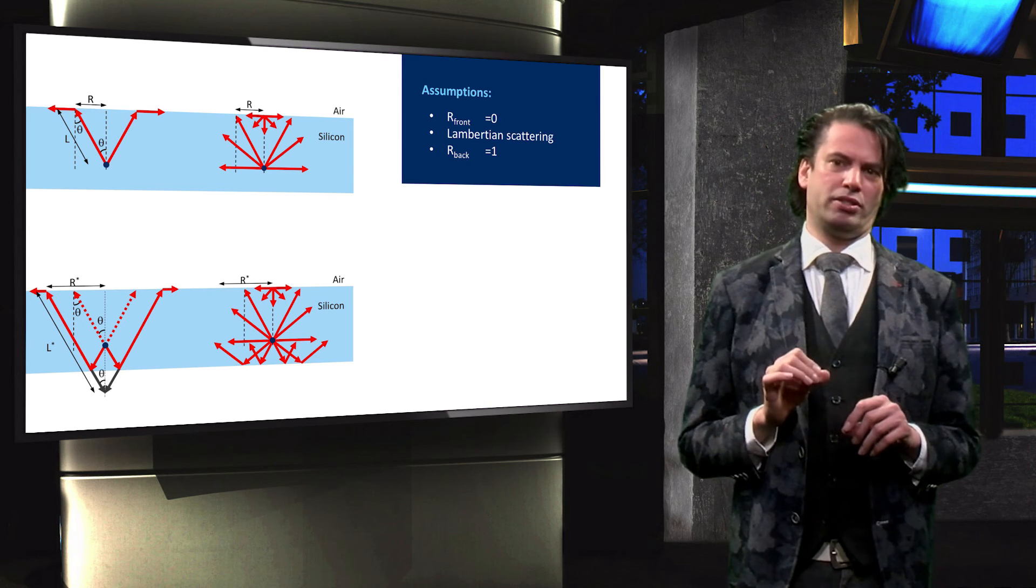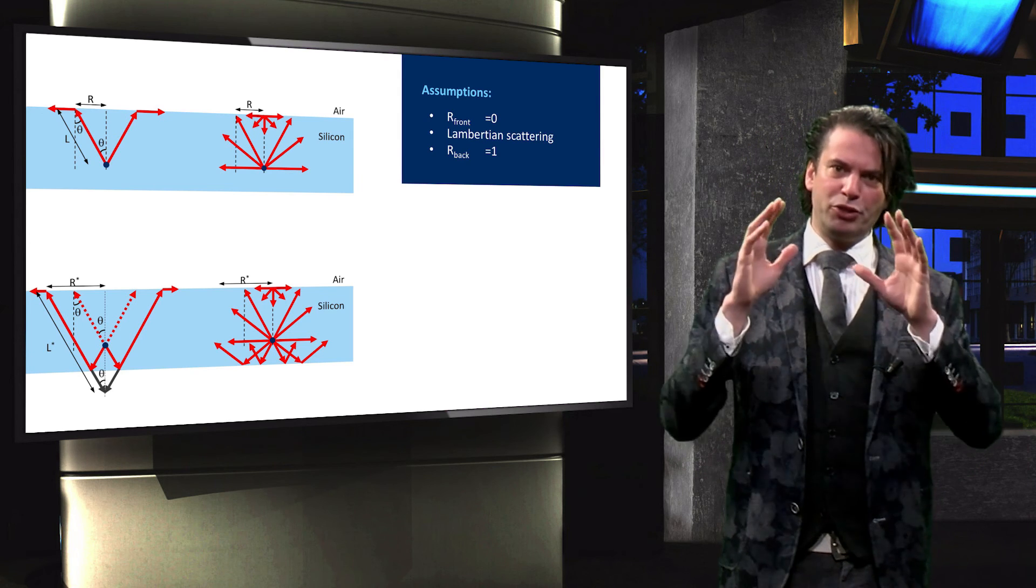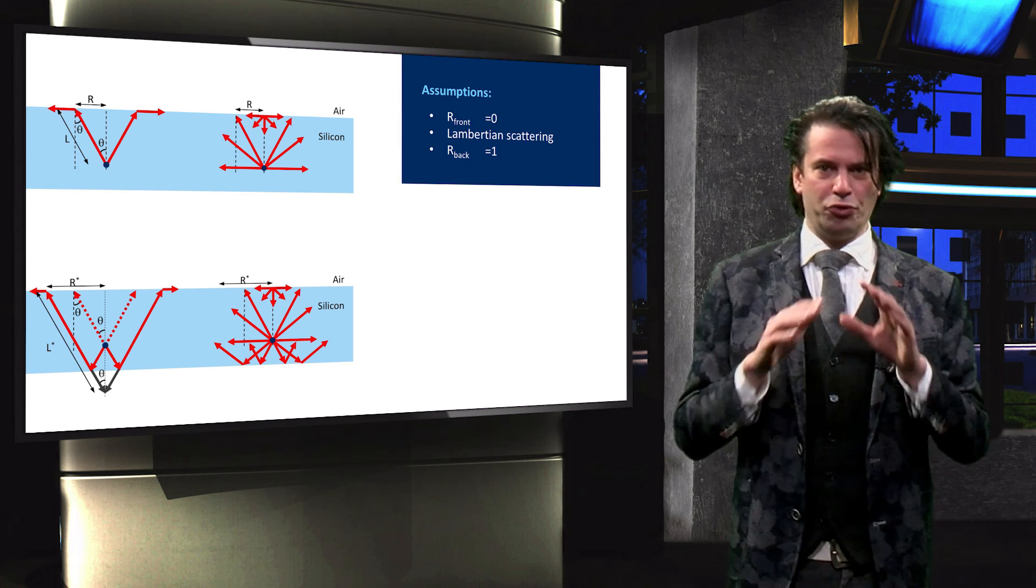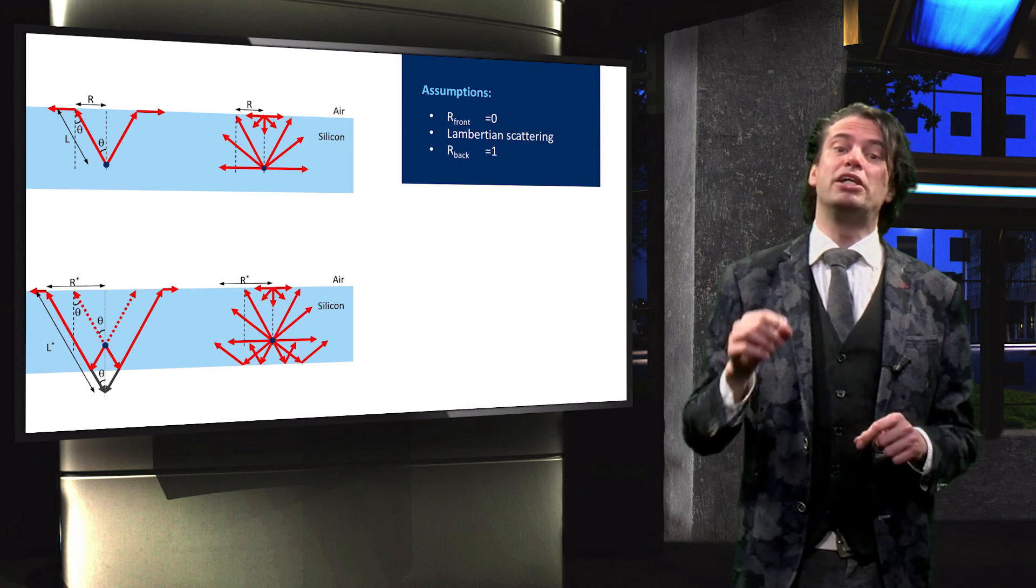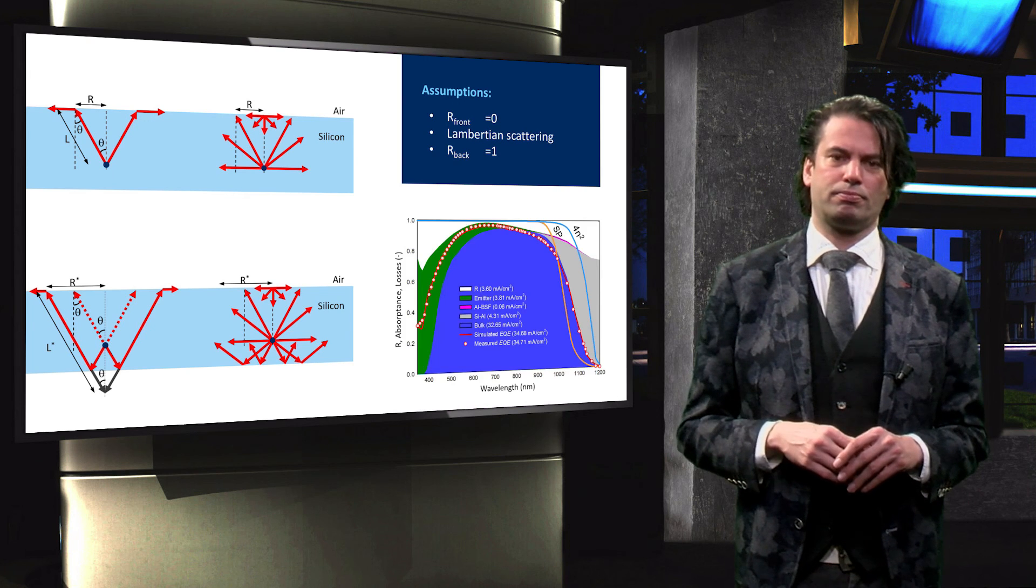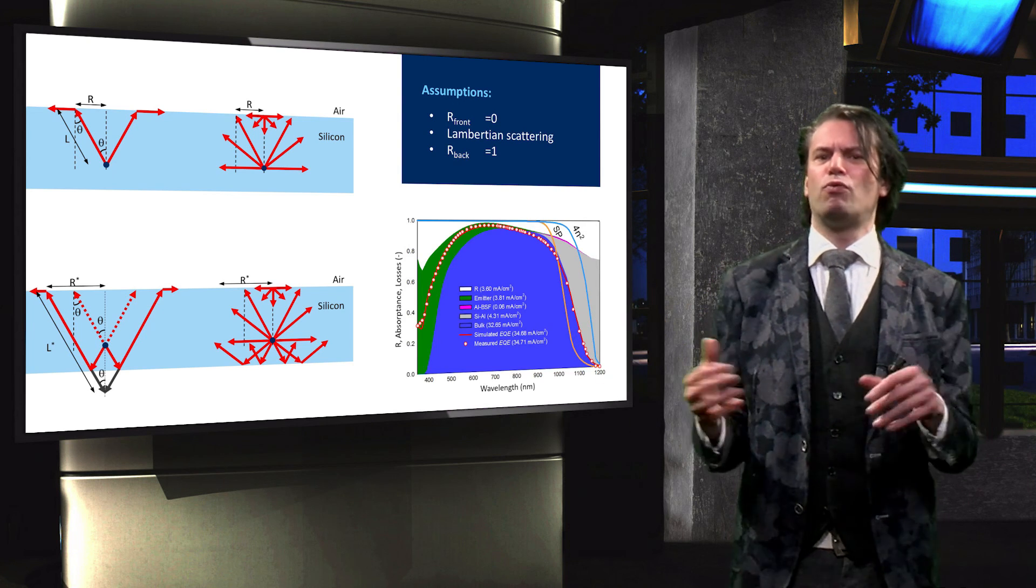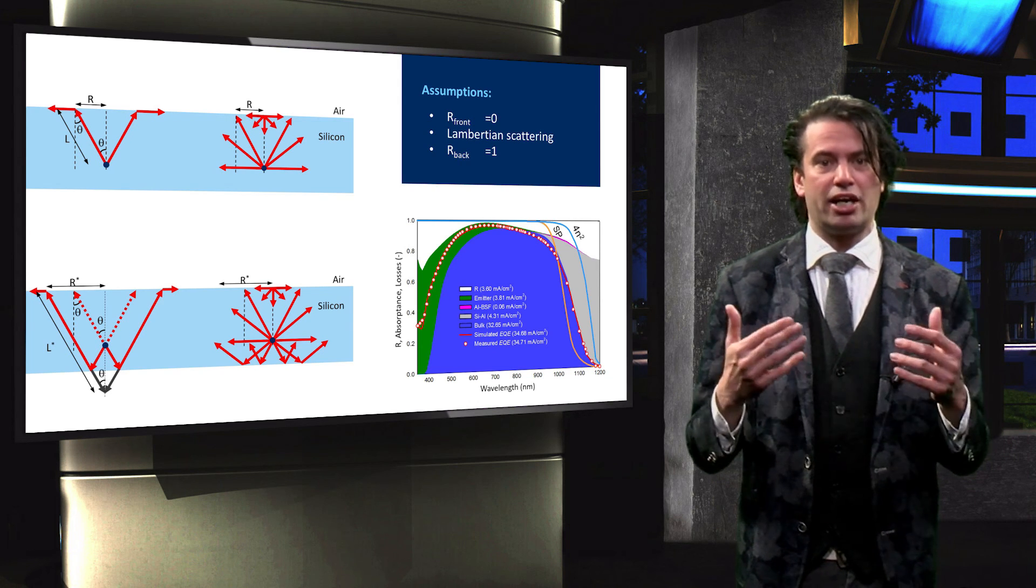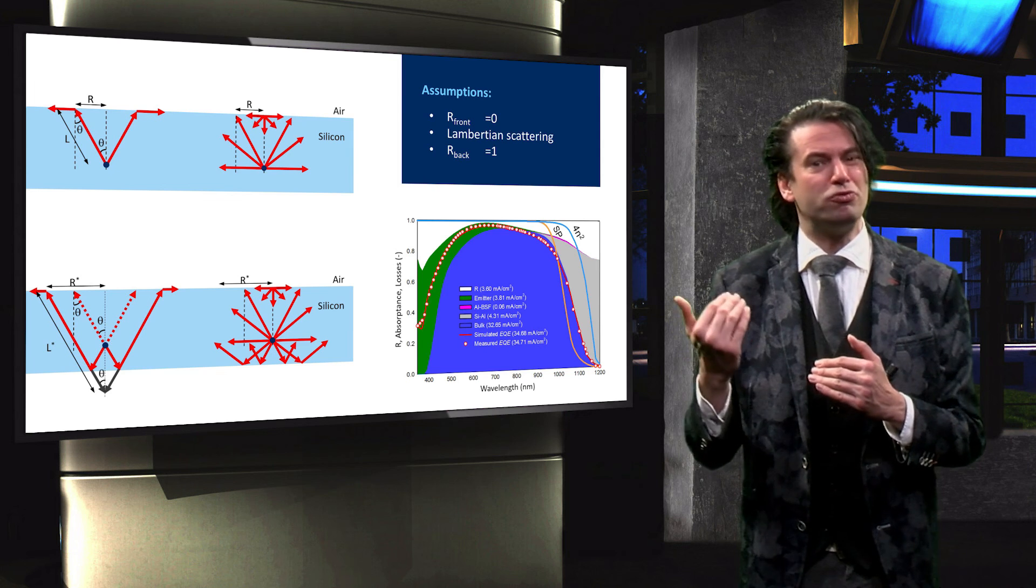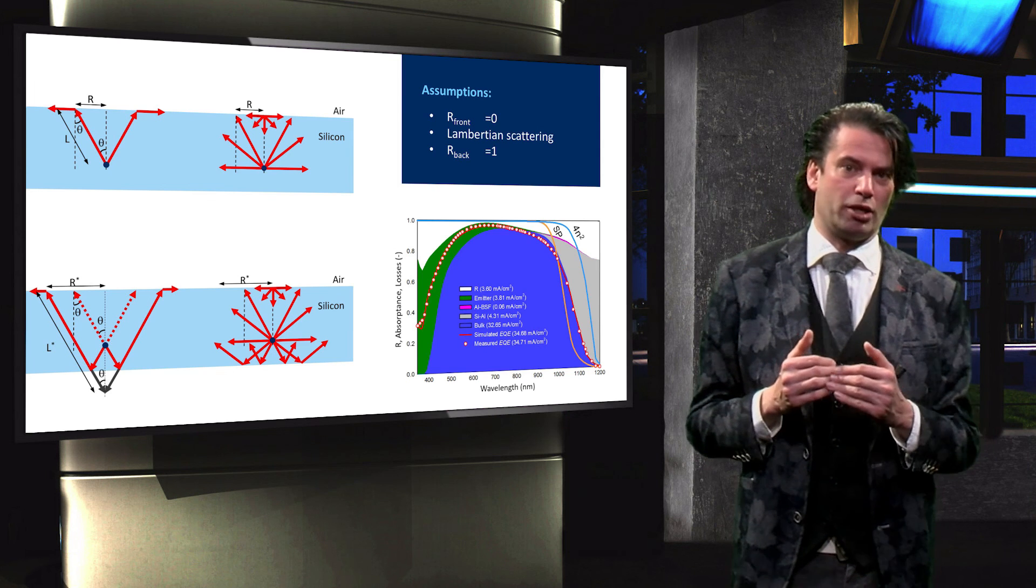In order to achieve the Yablonovitch limit, there should be no front reflection, no transmission from the back of the layer, and the scattering should be Lambertian. Finally, we discussed that well-designed solar cells with front nanotexture and a microtexture dielectric reflector can increase the light absorption very close to the Yablonovitch limit.